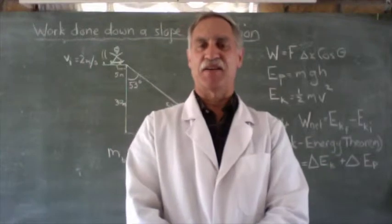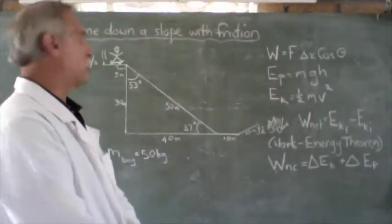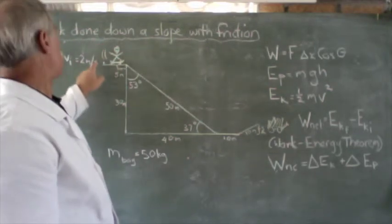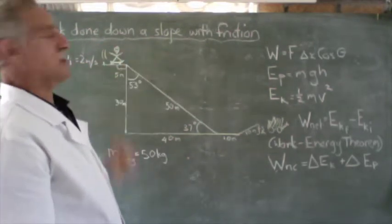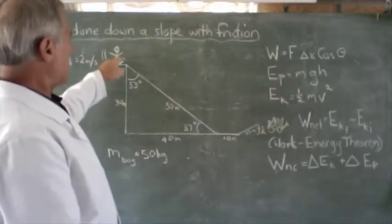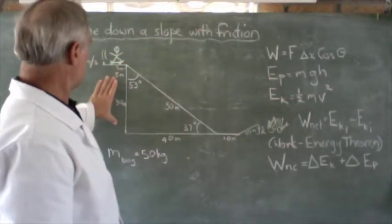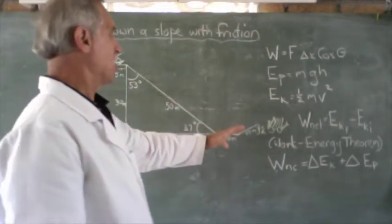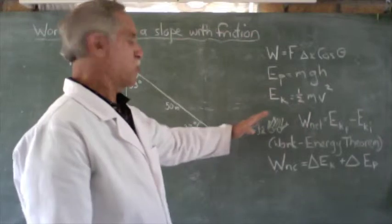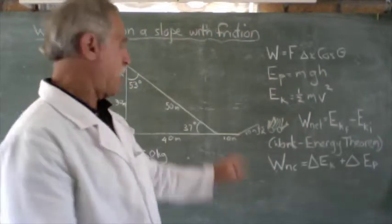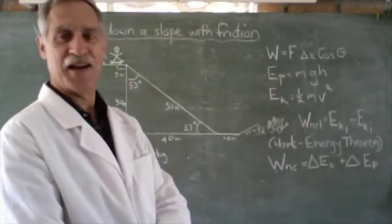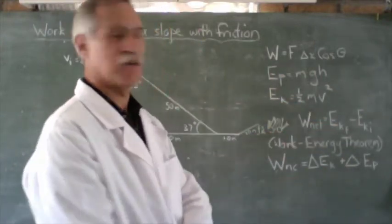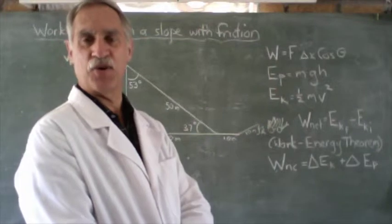Looking today at work done down a slope with and without friction. Now let's have a look at this hypothetical situation we've got here. We have a boy on a skateboard traveling at 2 meters per second in that direction to start off with. Then he rolls down a slope that is 30 meters high, hits the flat, rolls along that for 10 meters, then hits a ramp which is 10 meters long and 5 meters high.